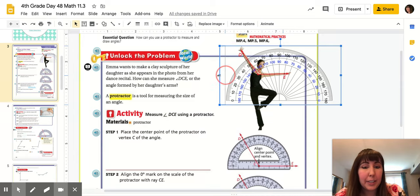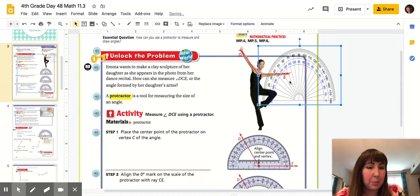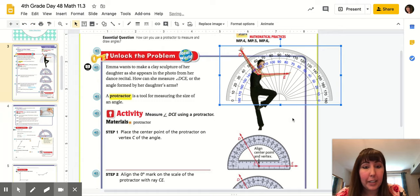If you accidentally grab a middle square and make the protractor look funky like this, just go back to the undo button so you can get it back to its original size.